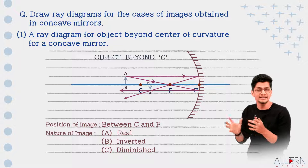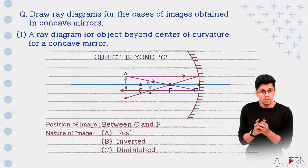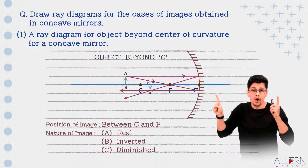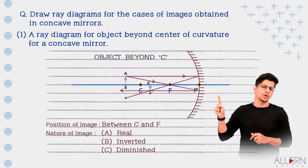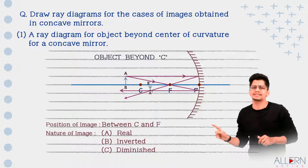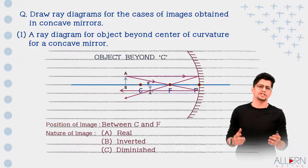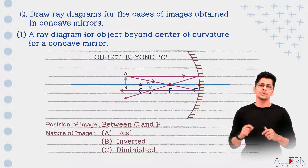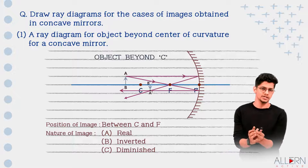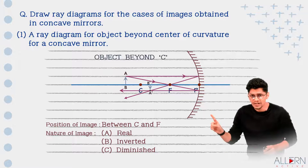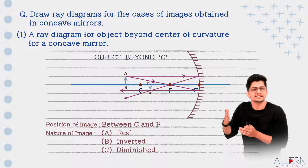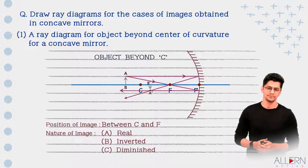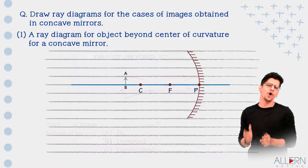When the object is placed beyond C, the image is obtained between C and F, and the nature of the image is real, inverted, and diminished. Real images are those that can be obtained on a screen, so you would have to place a screen there to see the image. Now we move to the second diagram, where the object is placed at center of curvature.